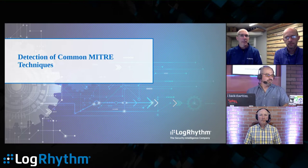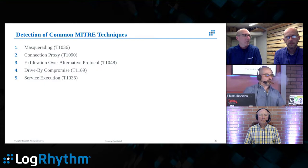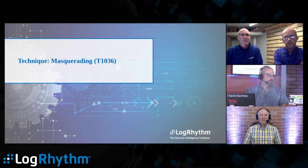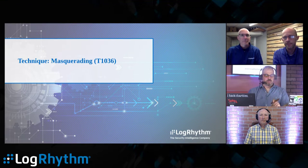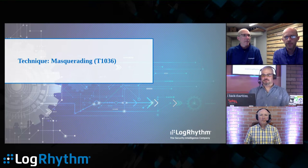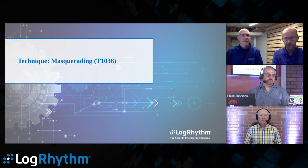Now we'll get into some detections. We're going to cover masquerading, connection proxy, exfiltration over an alternative protocol, drive-by compromise, and service execution. This spring we released our first version of our MITRE ATT&CK module — a collection of detection rules that comes out of the box for LogRhythm customers. We currently have about 26 detection rules, with the goal of one rule per technique.